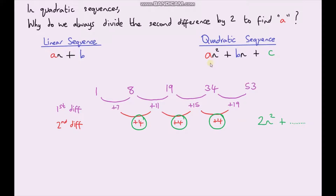Hello and welcome to another video on quadratic sequences. In the previous couple of videos we looked at the method of finding the nth term of a quadratic sequence, which involved firstly finding the first difference between each term, then finding the second difference — the difference between the differences. With quadratic sequences the second difference should always be the same. Whatever the second difference is, we always divide it by 2 and put it as the coefficient in front of our n-squared term. In this video we're going to look at why we always divide the second difference by 2 to find a, the coefficient in front of our n-squared term.